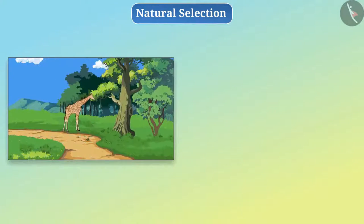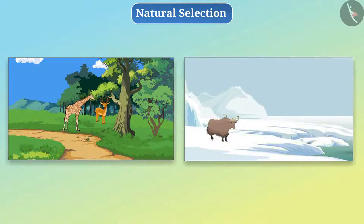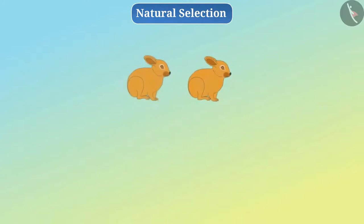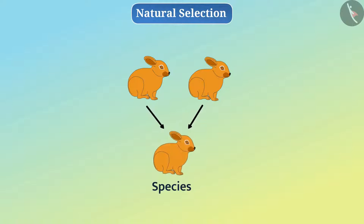For example, some organisms are taller in height, so they can eat the leaves and fruits of tall trees, which lower living organisms cannot. The skin of some creatures is thick, so they can live in a cold region, but thin-skinned creatures are unable to live in a cold state. Living organisms reproduce and transmit the variations to next generations, often giving rise to new species. In this way, organisms evolve by natural selection.